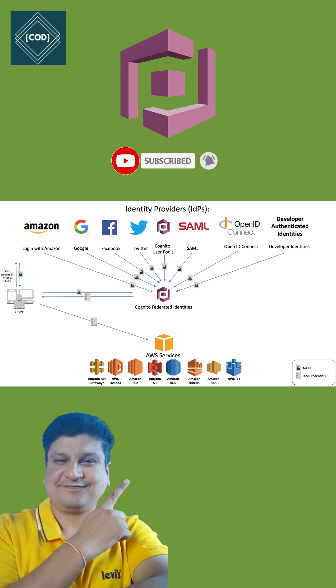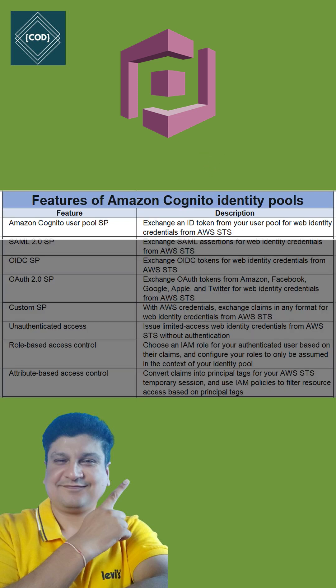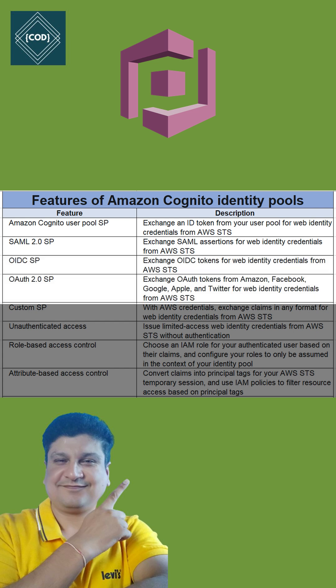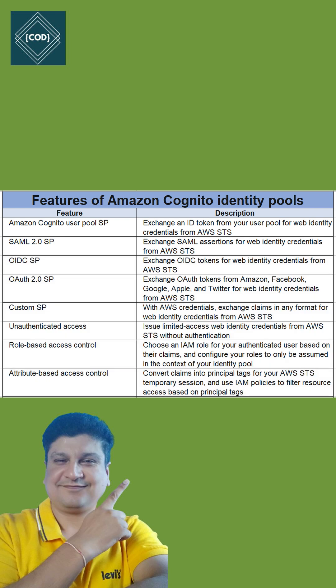The second feature is the Identity Pool. Identity Pool issues AWS credentials for your app to serve resources to users in the AWS cloud. Some of the features of Amazon Cognito Identity Pool are: first, it supports Amazon Cognito User Pool service provider; second, SAML 2.0 service provider; third, OIDC service provider; fourth, OAuth 2.0 service provider; fifth, custom service provider.